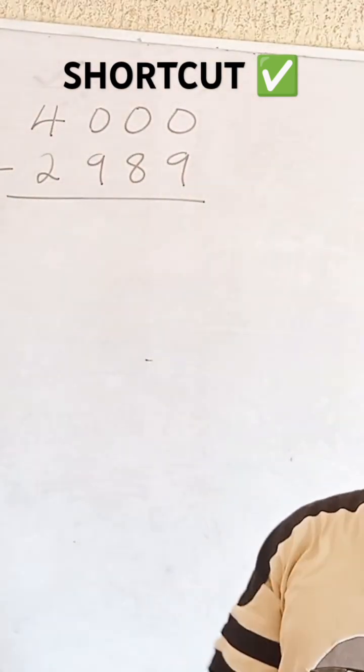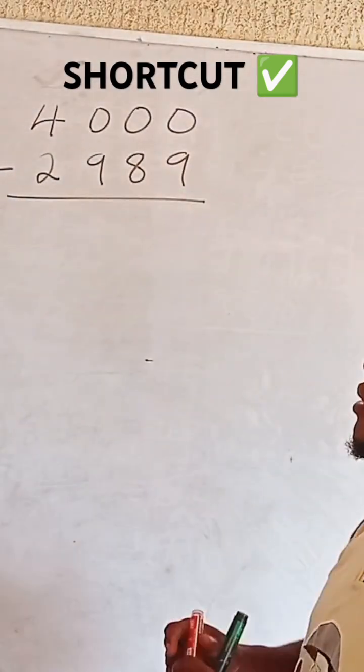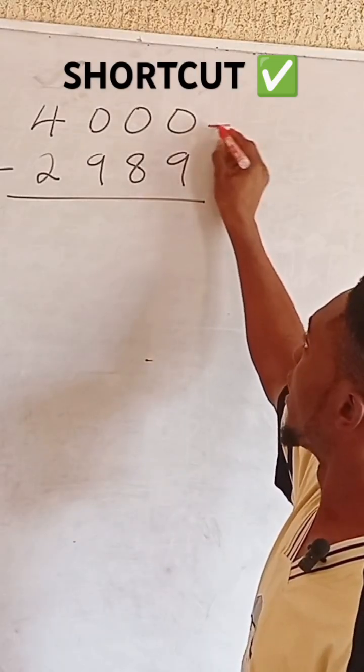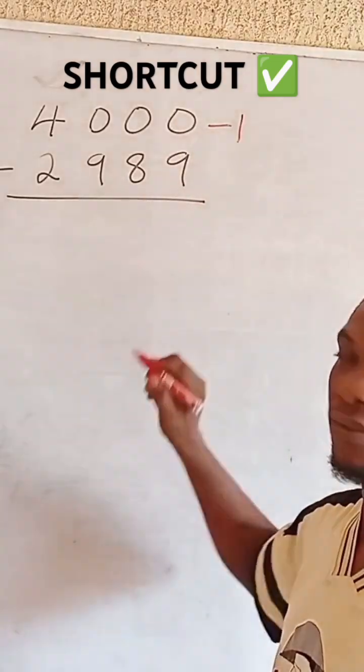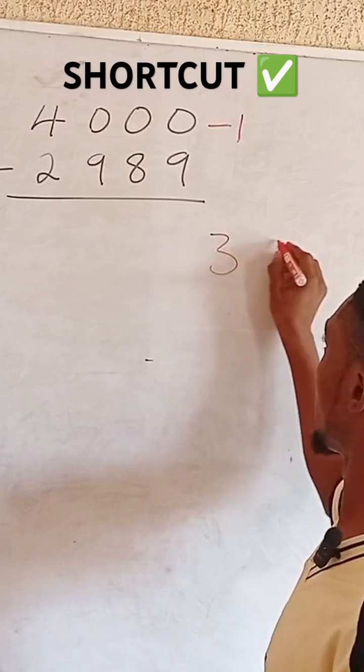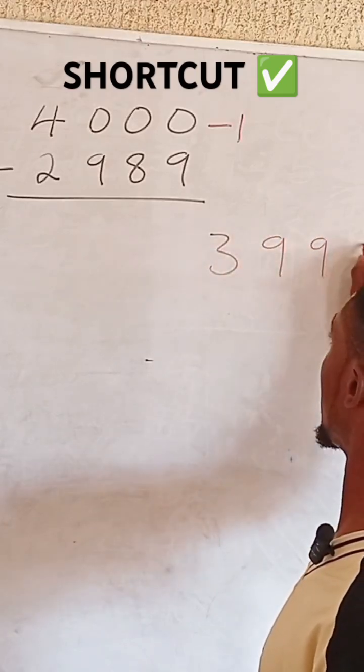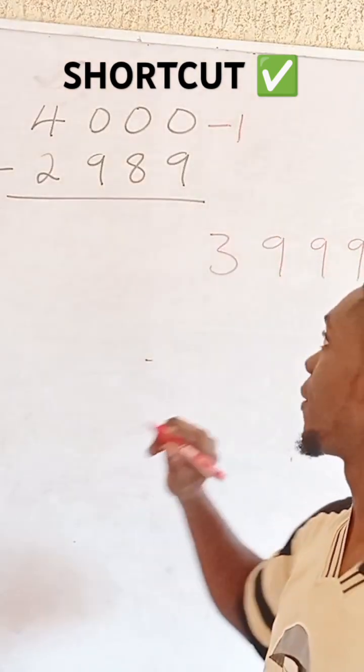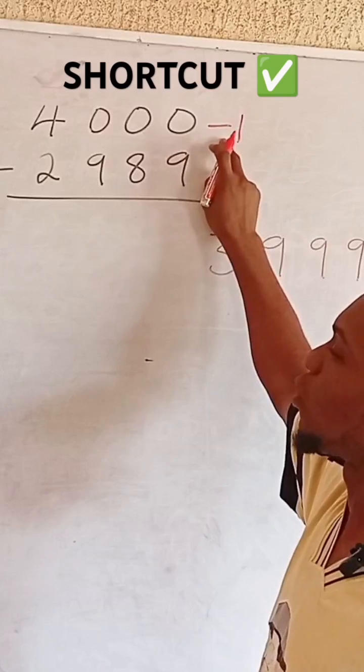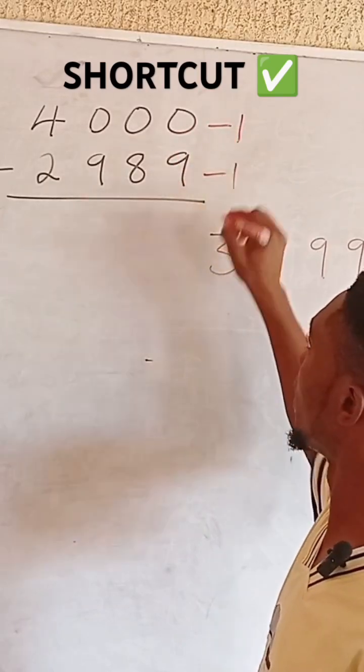You just subtract one from each of these numbers. Now 4000 minus one will give you what? 3999. That's what we are going to have. Then, since you have subtracted one from this number, also subtract one from this number.